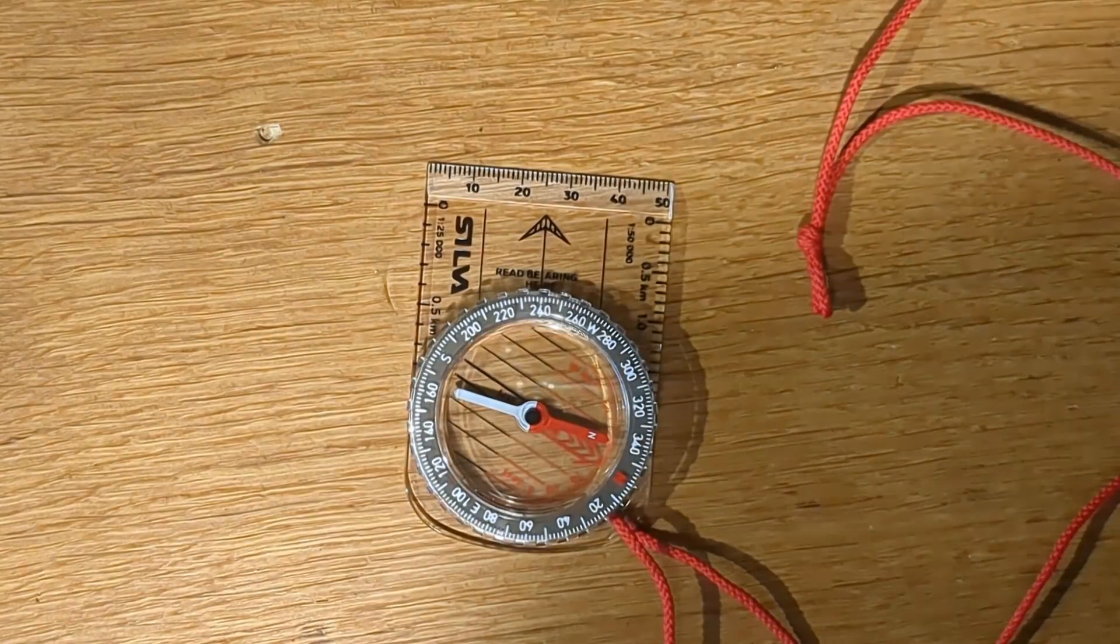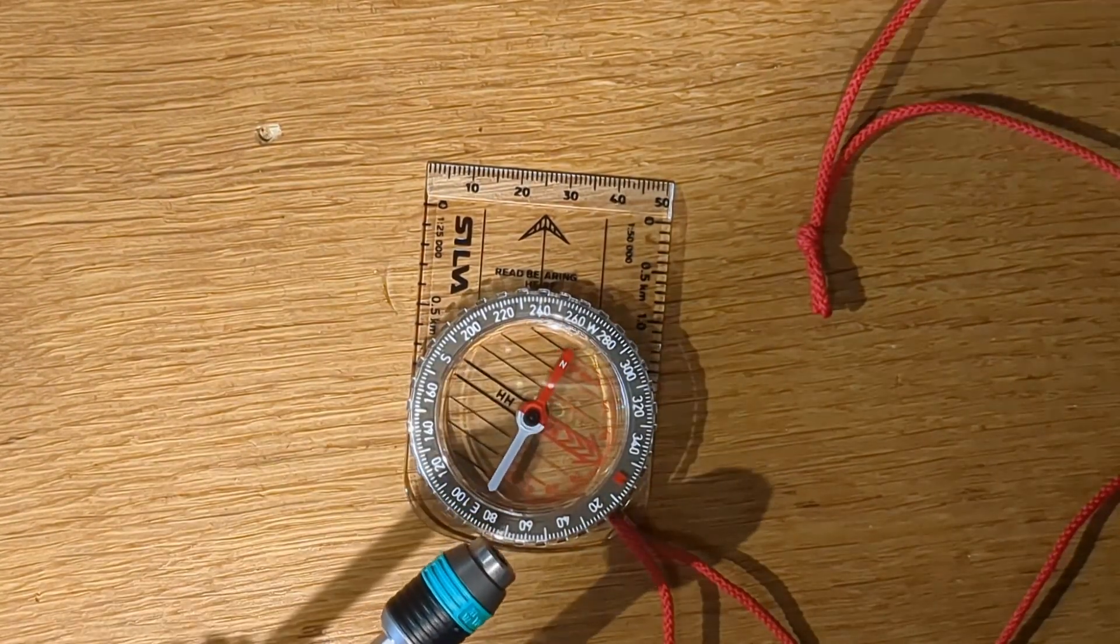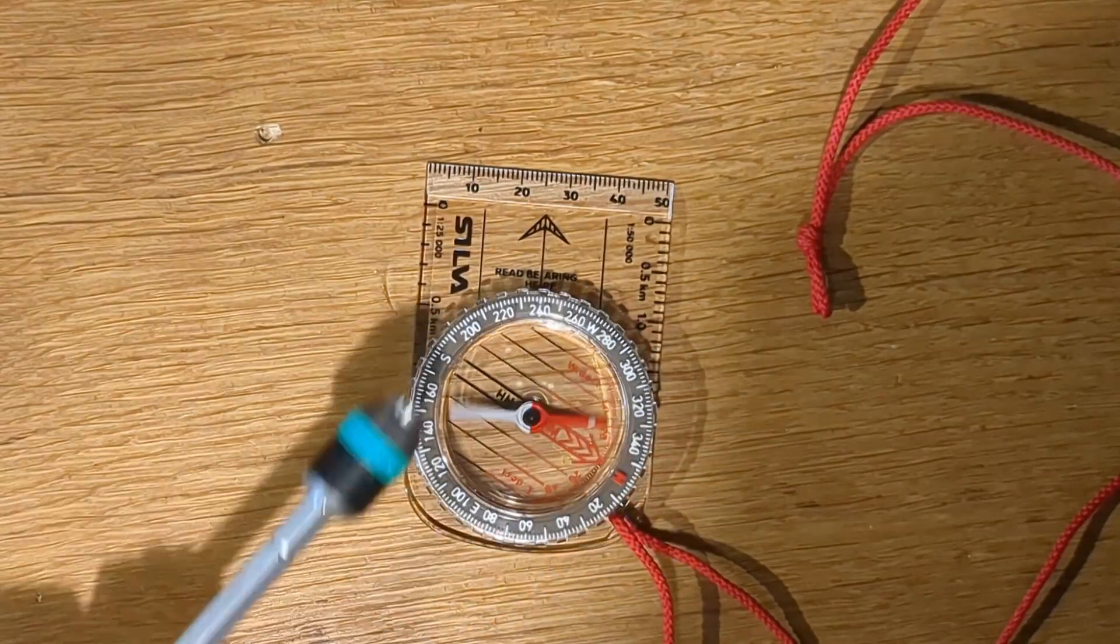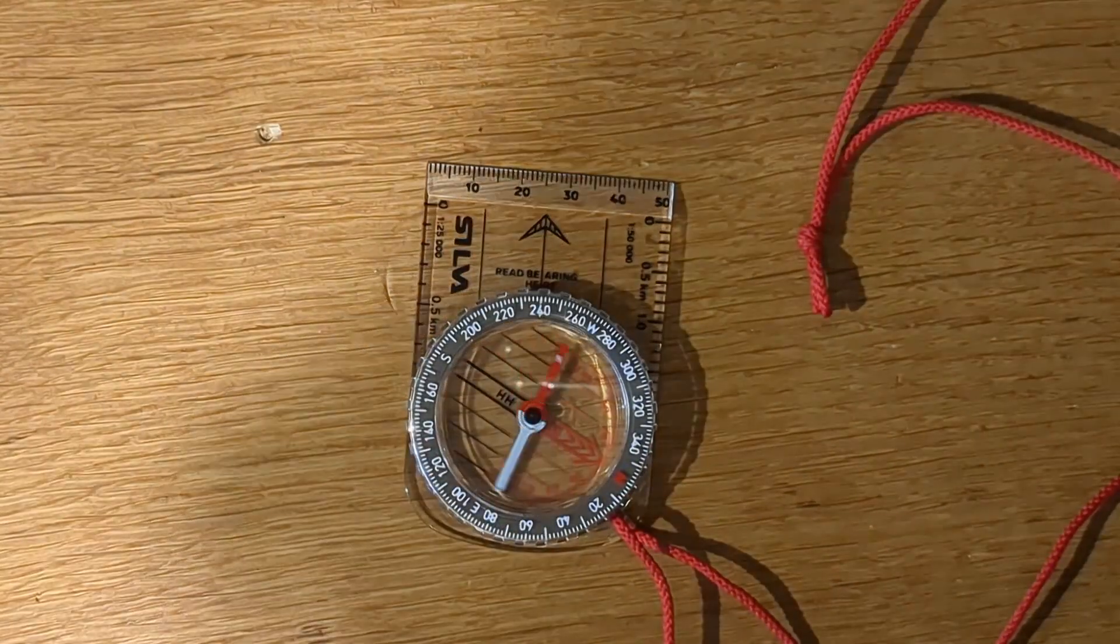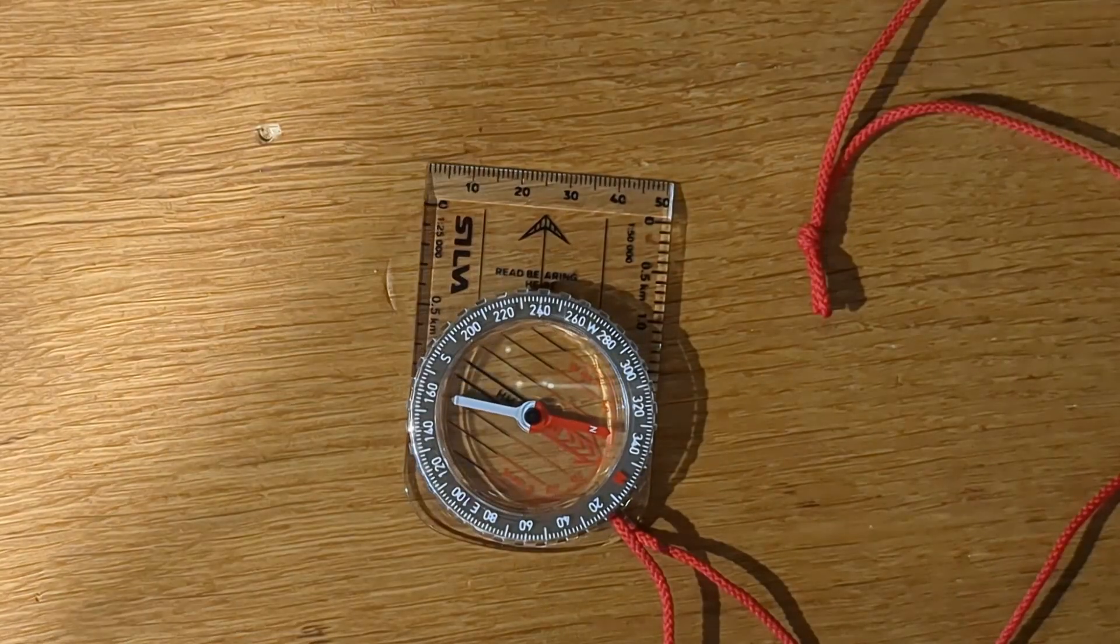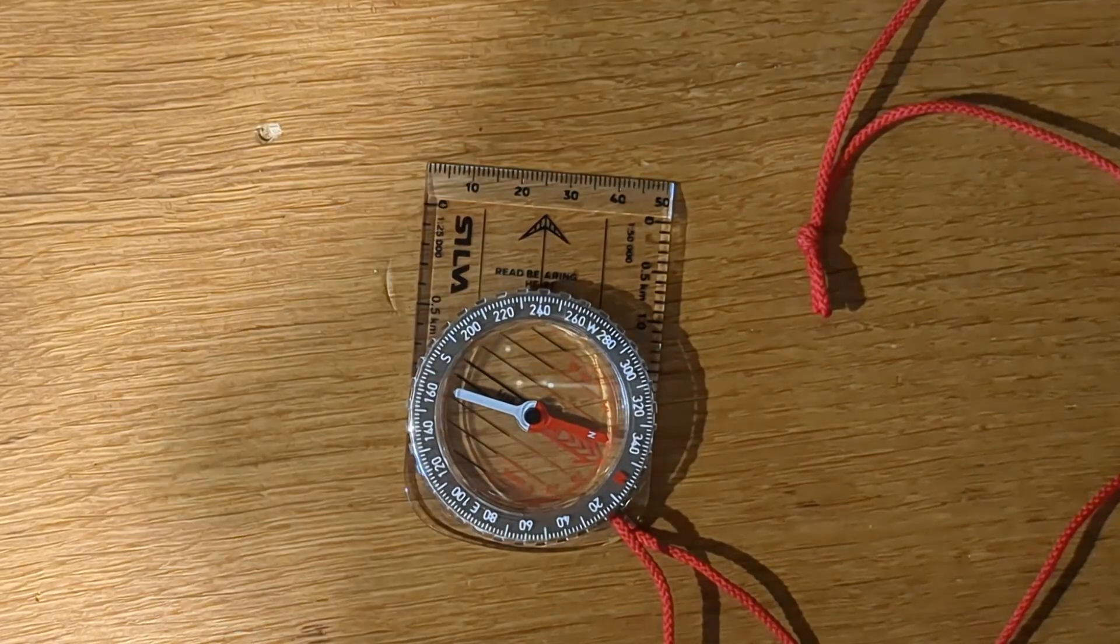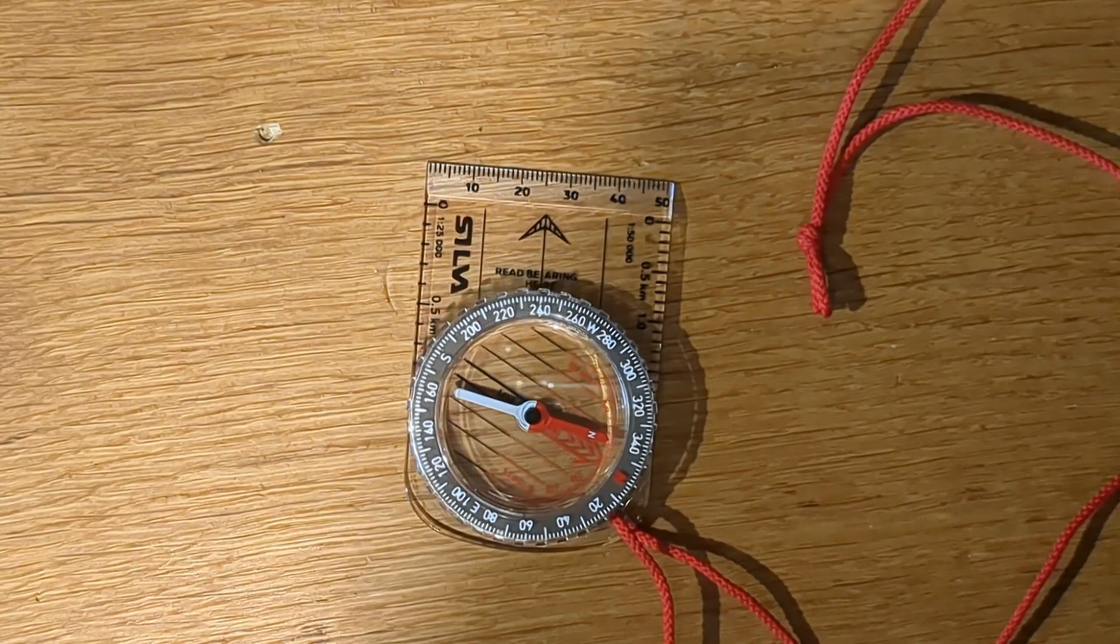As an extreme example, I've got a magnetic screwdriver here, and you can see that as you bring it close to the compass, it causes it to rotate. So it's really quite obvious and clear that you shouldn't have a magnet anywhere near your compass if you want to take an accurate reading. In fact, keep magnets as far away as possible from your compass.